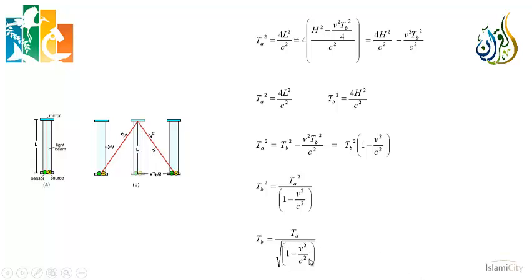This square root is less than 1, because it's 1 minus some positive number. So if the guy on the spaceship measures his time — say TA is 1 second — the guy on the ground measures something bigger than 1 second, say 1.5 seconds. He turns to the guy on the spaceship and says, you measured 1 second, I measured 1.5 seconds — your watch is running slow. This is what time dilation means: 1 second is no longer 1 second. This is not an artifact, not an error in measurement. This is the way the universe works. Both of them are correct. Time is no longer absolute.